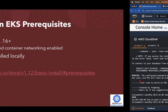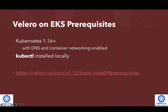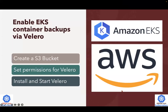So now, how to enable container backups with Valero on EKS. It's really about three simple steps. Number one, create an Amazon S3 bucket. Number two, set the permissions for Valero to access. And last but not least, do the Valero install and start the Valero server.